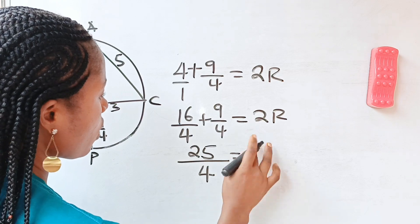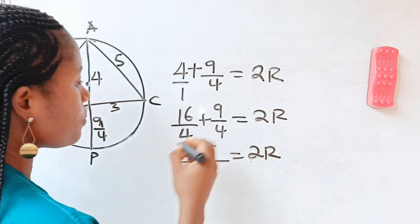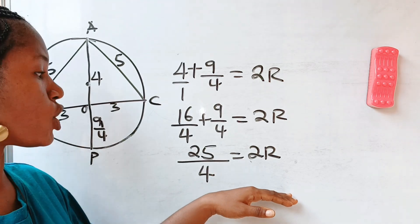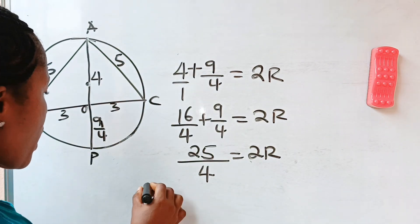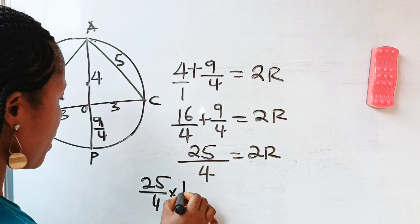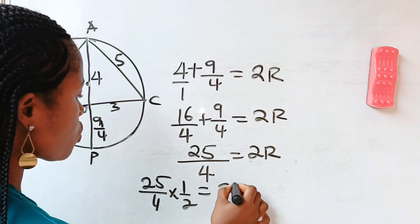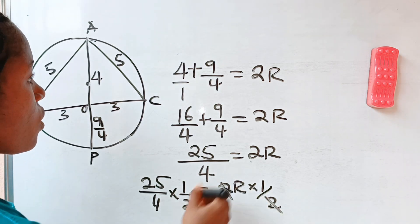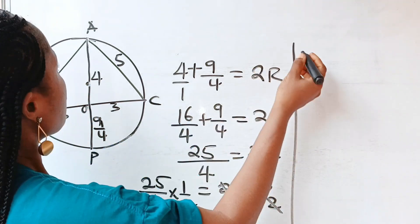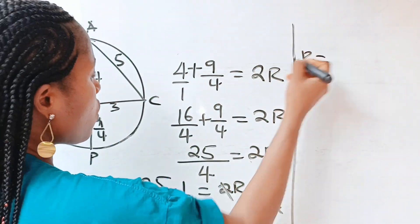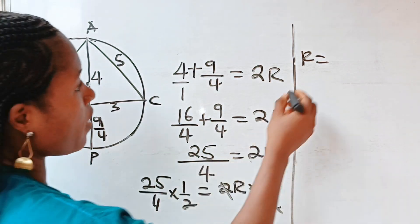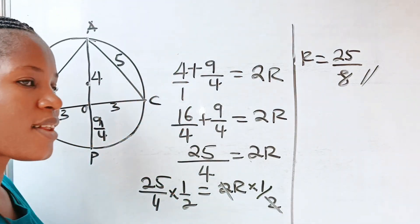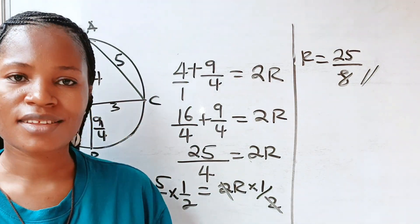To get the value of r, multiply both sides by one half. Twenty-five over four times one half equals r, so r equals twenty-five over eight. That is the value of our radius.